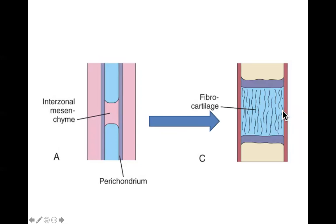For cartilaginous joints there are two main kinds: fibrocartilage and hyaline cartilage. For fibrocartilage: dense interzonal mesenchyme tissue differentiates into fibrocartilage through genetic programming — that's all there is to it. The same thing happens with hyaline cartilage: dense interzonal mesenchyme differentiates into chondroblasts which secrete intracellular matrix, and you have hyaline cartilage. Pretty much the same process for both fibrocartilage and hyaline cartilage joints.